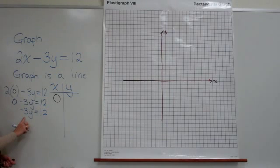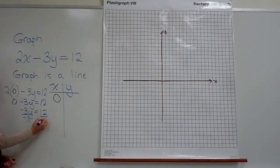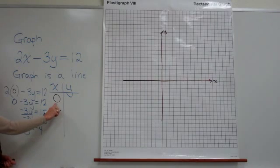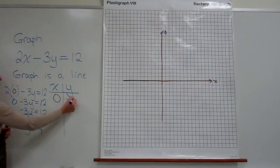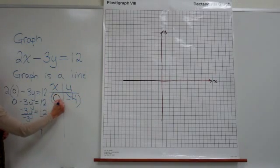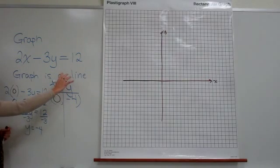And then we want to solve for y. So we've got all the y terms on one side, all the not y terms on the other side. We will divide both sides by the coefficient of y. We'll divide both sides by negative 3 and we'll get that y is equal to negative 4. So when we picked 0 for our x, we got a y value out of negative 4. So there is an ordered pair solution of that original equation.